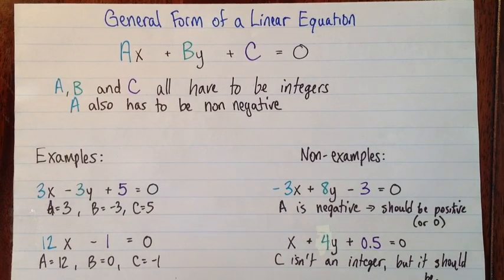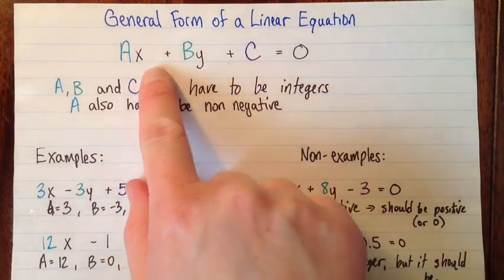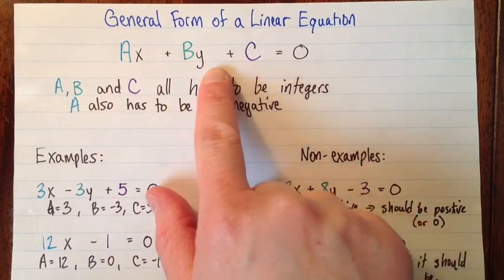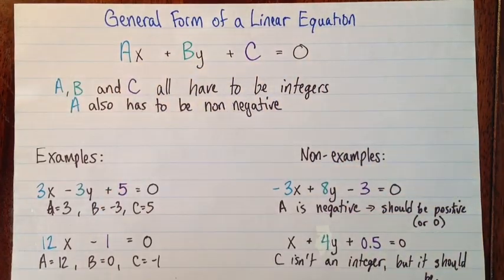So remember, for general form: Ax + By + C = 0. All of these have to be integers, and A also has to be positive. Okay, good luck. Thank you.